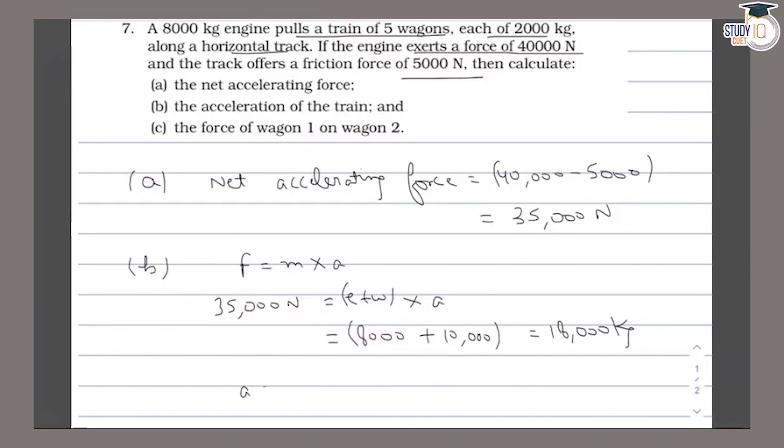Now to find our acceleration, we use F equals ma. Our acceleration is 35,000 divided by 18,000, which gives us 1.944 meter per second square.